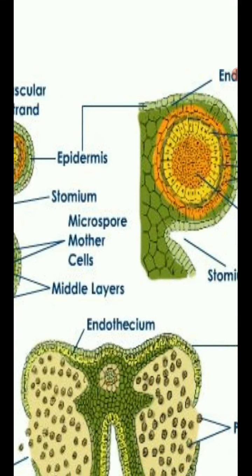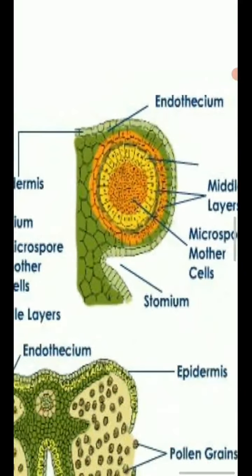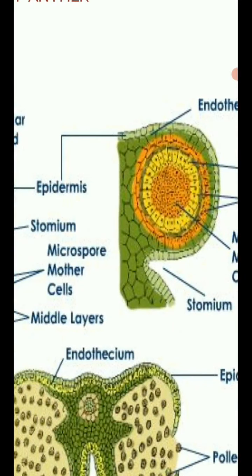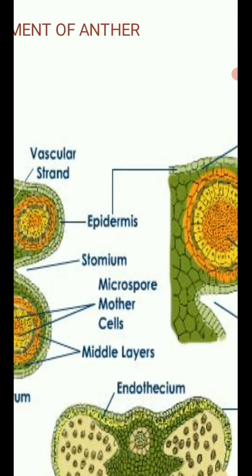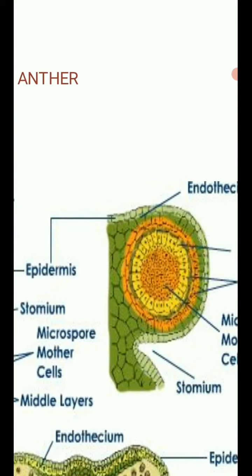Now we can see the anther wall. From outer to inner: the first layer is epidermis, then endothecium, then the third layer is the middle layer, and the fourth is tapetum. The epidermis is the outermost layer — its major function is protection. It is made up of a single layer. These cells undergo repeated anticlinal division, enlarge, and form the internal tissue.